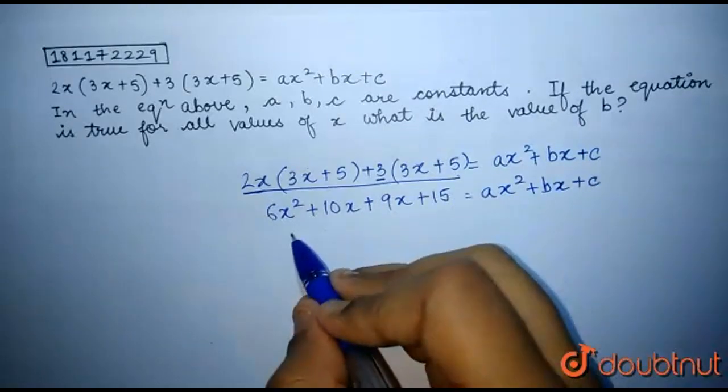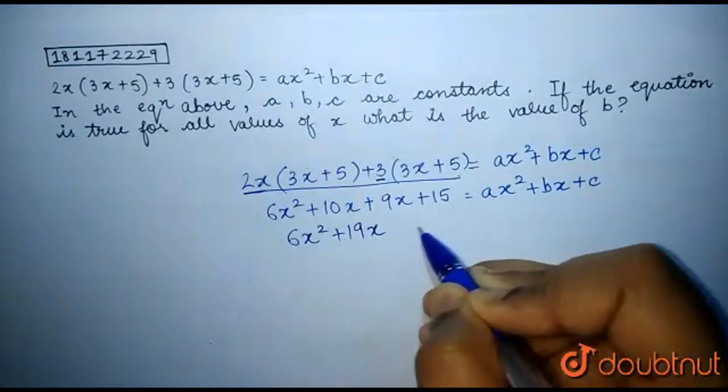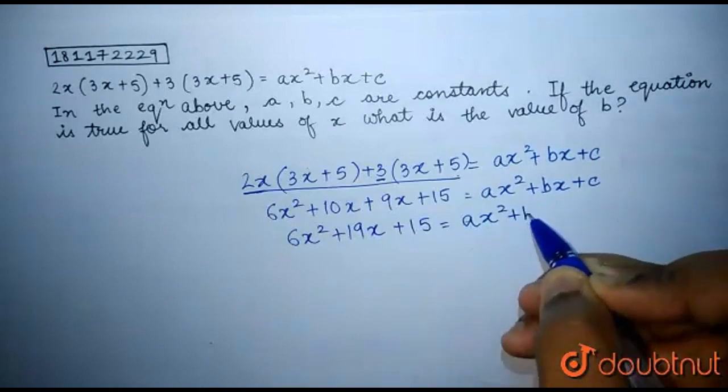Bringing the like terms together, we get 6x square plus 19x plus 15 is equal to ax square plus bx plus c.